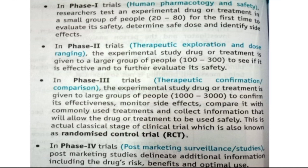In Phase 3 trials, it is for therapeutic confirmation or comparison. The drug is given to large groups of 1,000 to 3,000 people to confirm its effectiveness, monitor side effects, compare it to commonly used treatments, and collect information for safe use. This is the classical stage of clinical trial, also known as the randomized clinical trial. In Phase 4 trials, there is post-marketing surveillance — studies that delineate additional information including the drug's risks, benefits, and optimal use.